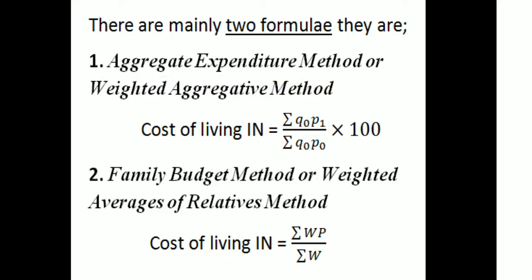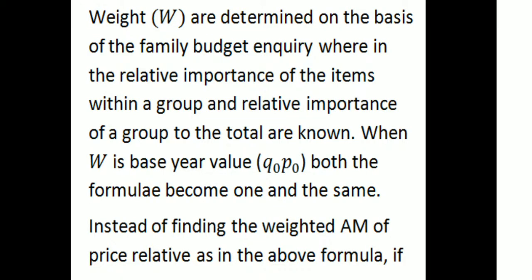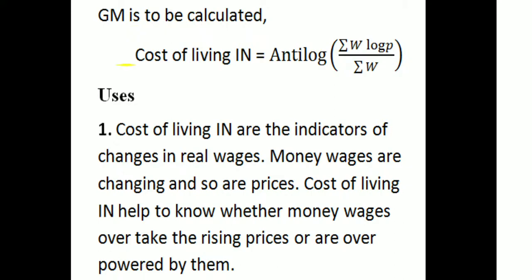There are mainly two formulas. First, the aggregative expenditure method or weighted aggregative method: cost of living index number equals summation of Q0·P1 divided by summation of Q0·P0, into 100. Here Q0 is base quantity, P1 is current price, and P0 is base price. Second, the family budget method or weighted average of relatives method: cost of living index number equals summation of W·P divided by summation of W. Here W is the weight determined on the basis of family budget inquiry. When W equals base value Q0·P0, both formulas become one and the same. If geometric mean is to be calculated: cost of living index number equals antilog of summation of W·log P divided by summation of W.